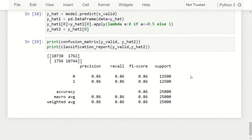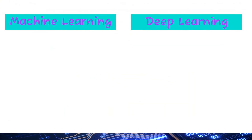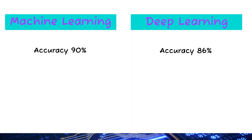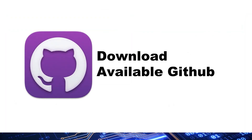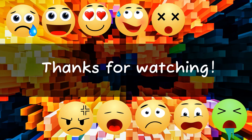The deep learning model is evaluated on the 20% test set using the confusion matrix, scoring about 86% for accuracy, precision, recall, and F1 score. Comparing all algorithms, the machine learning models at 90% slightly outperform the deep learning model at 86%. Despite longer training, deep learning did not fare better — likely because the underlying phenomenon is simple enough for ML to capture, and the 50,000-record dataset is too small for deep learning. A larger dataset could support more complex architectures and improve results. All Python code and slides are available on GitHub.